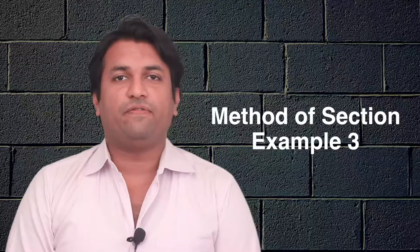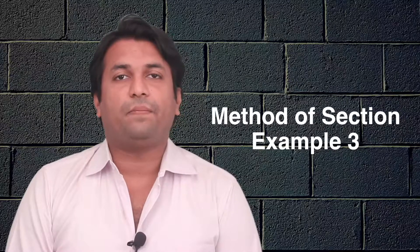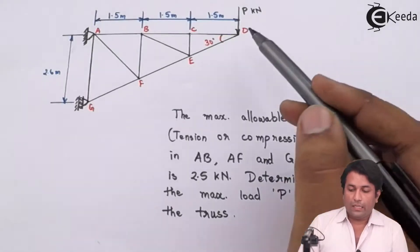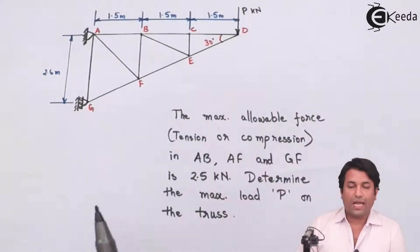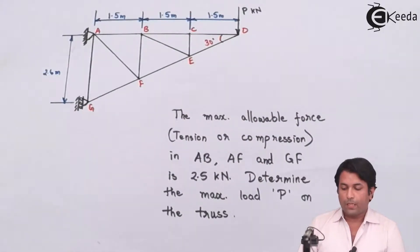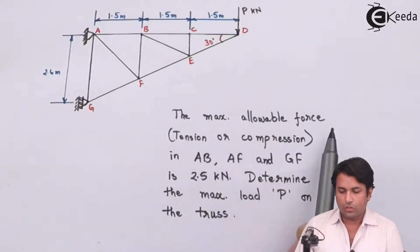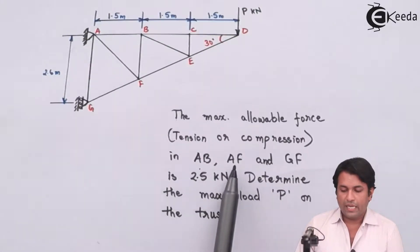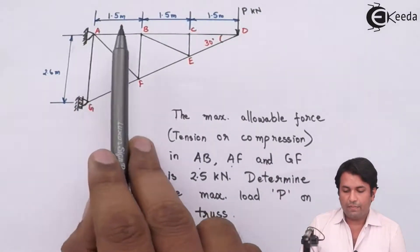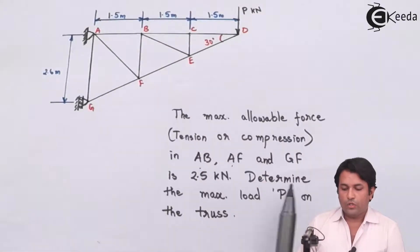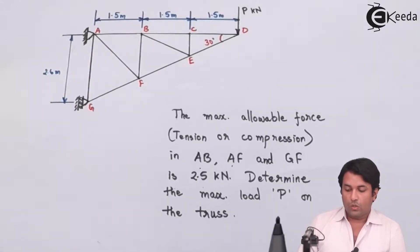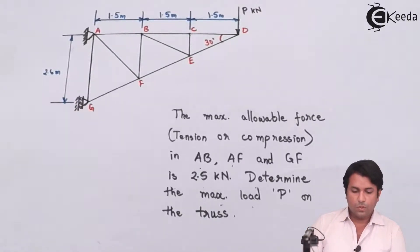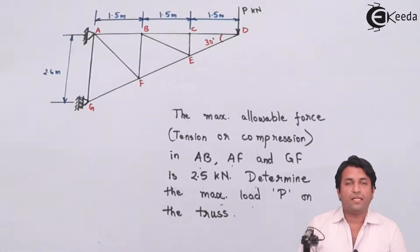Hello students. In this video lecture we are going to see the next example, example number three for method of sections. In this example, the value for the force acting in this truss is not given — we need to calculate that value. The question says that the maximum allowable force, be it tension or compression, acting in members AB, AF, and GF should not exceed 2.5 kilonewtons, so I need to find out the maximum load P on the truss.